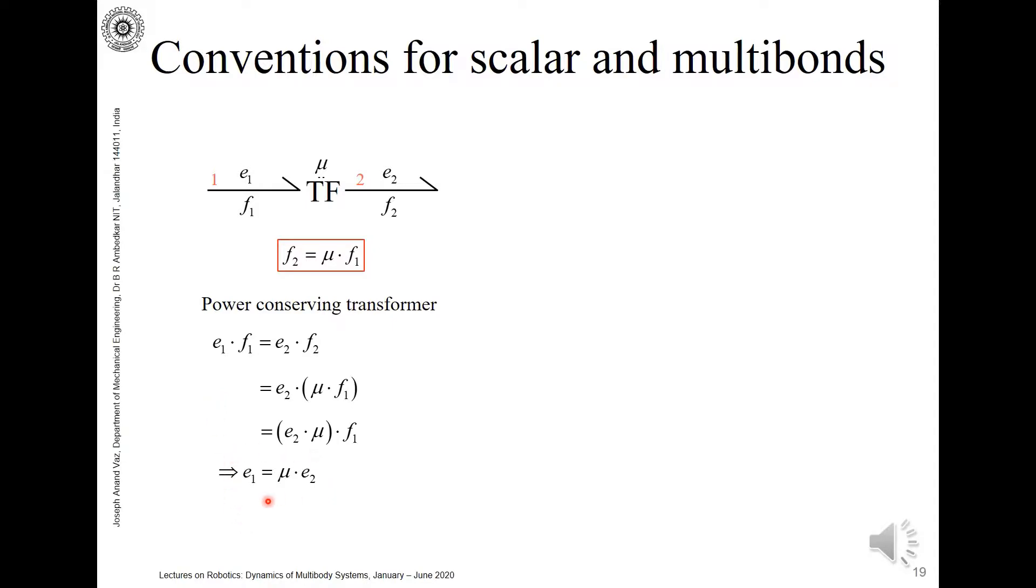So this relationship between the efforts has emerged out automatically because of the power conserving nature of the transformer. We can see flow 2 is equal to μ times flow 1—this is what we started with—and we arrived at e1 equal to μ times e2.